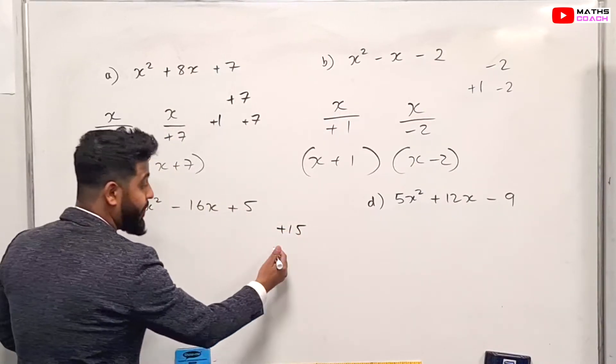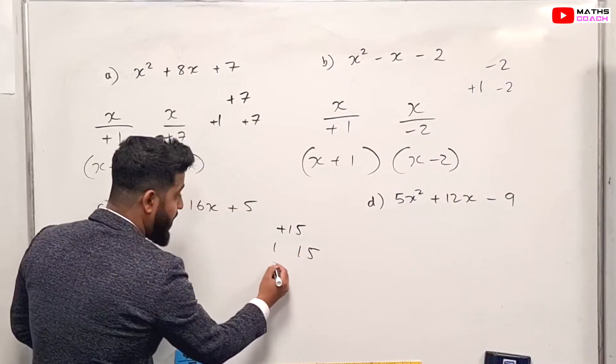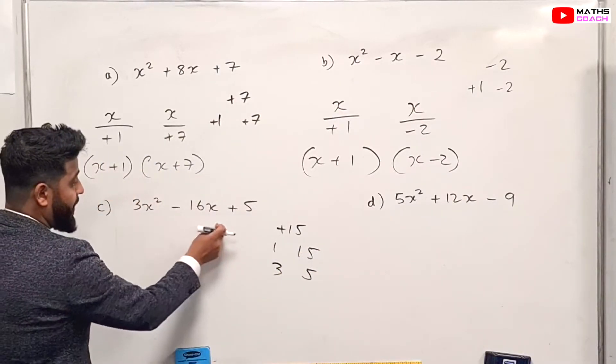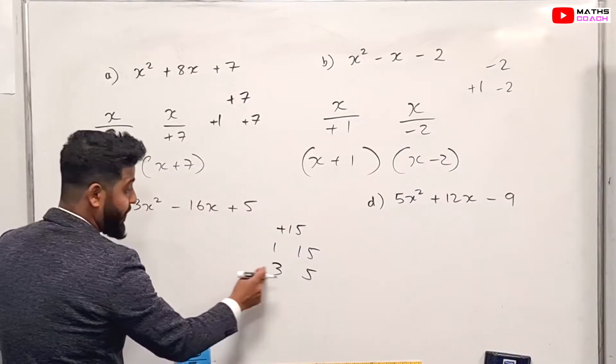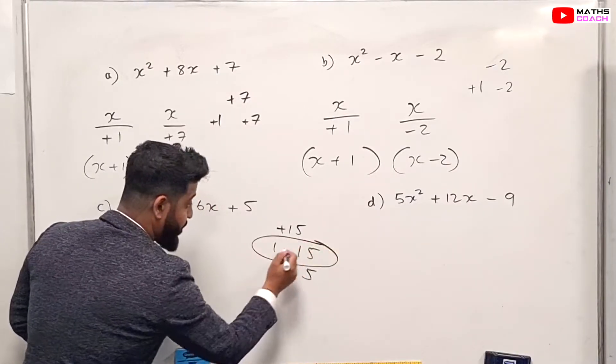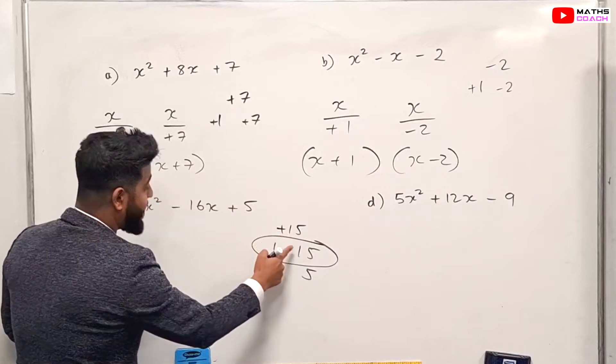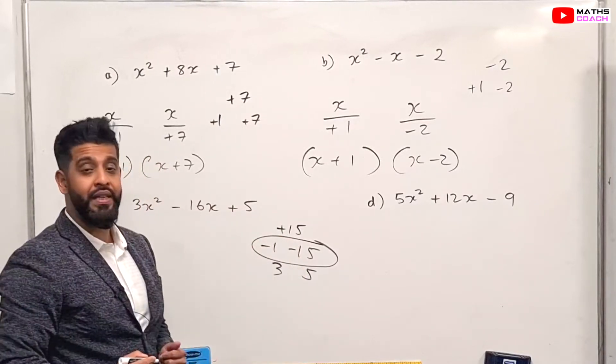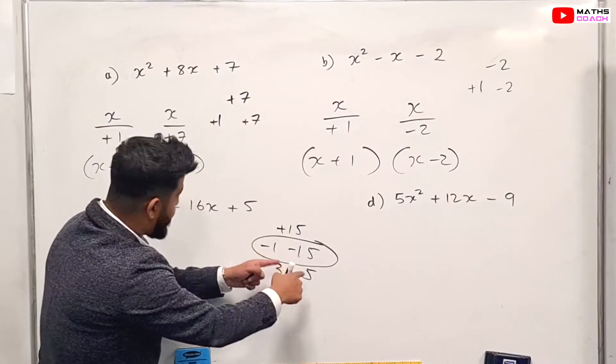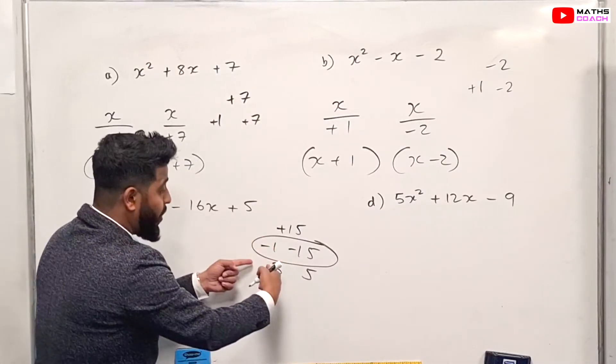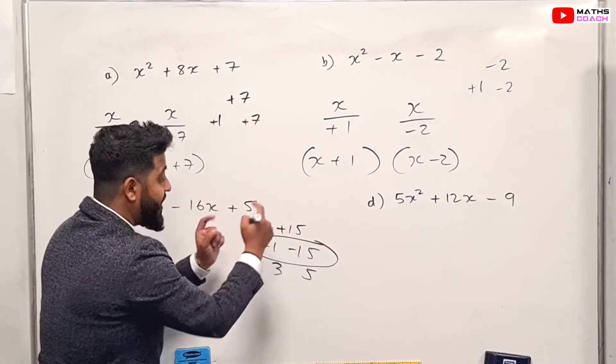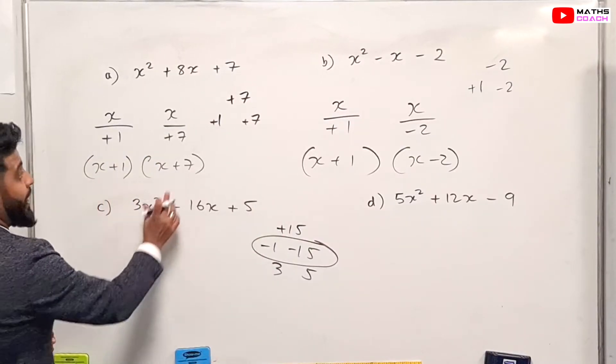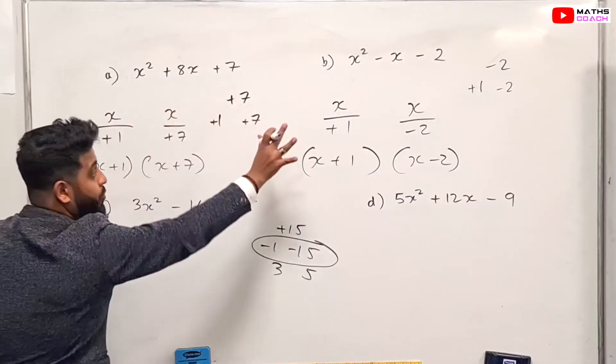So once again, three will multiply by the five here, which is plus 15. And we find the factors of 15, which is one, 15, three, and five. And we want to make sure that we can get a minus 16 out of it, which is going to be used in this combination. Now we're going to multiply to give plus 15 and add to give minus 16, which means both of them have to be negative. Because minus one minus 15 is minus 16, and minus one times by minus 15 is a positive 15.